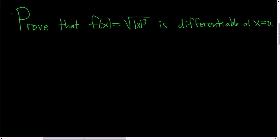In this video, we're going to prove that this function here, f of x equals the square root of the absolute value of x cubed, is actually differentiable at x equals 0. So proof.